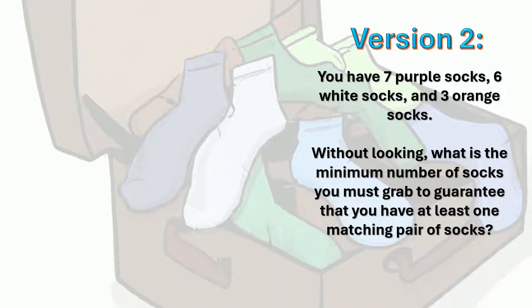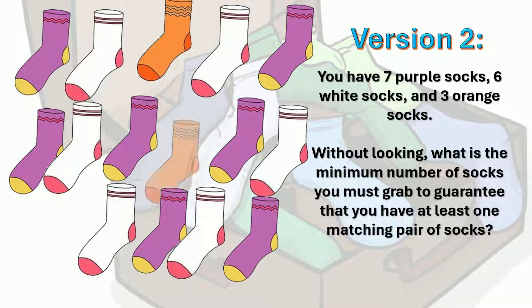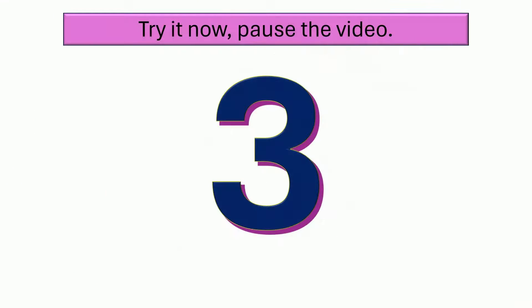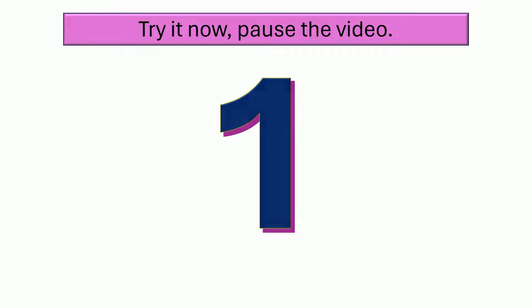All right. On to version two. So you've got seven purple socks for some reason and six white socks and three orange socks. Now without looking, you're going to grab a bunch of them. What's the minimum number of socks that you have to grab to guarantee that somewhere in that batch, you got a matched pair? All right. So try this one, put your answer in the comment. Let me know how you're doing.